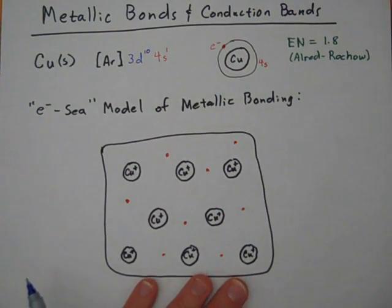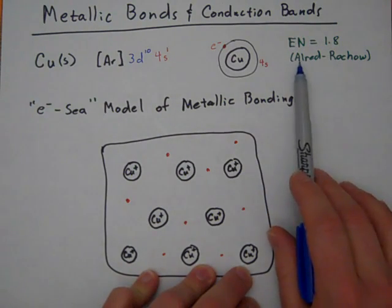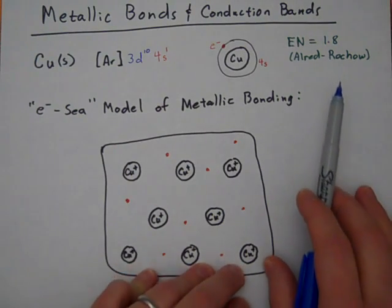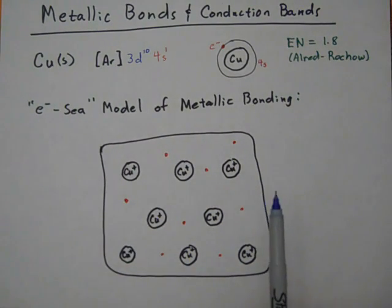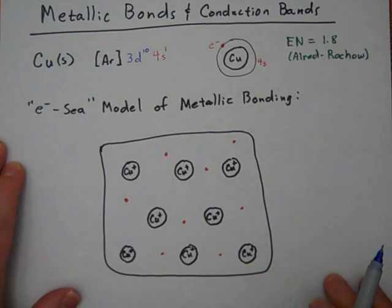Another thing we know about copper is it has an electronegativity of 1.8. This is on the scale by Allred and Rochow, which is different than the Pauling scale. There are different ways of measuring electronegativity. But the important thing is it's much less than fluorine's electronegativity of 4.1, and somewhat more than the electronegativity of sodium, which has an electronegativity of about 1.0. So this is kind of in between, which means it doesn't hold very tightly to its electrons, but holds on moderately tightly. So it's willing to give those electrons up.